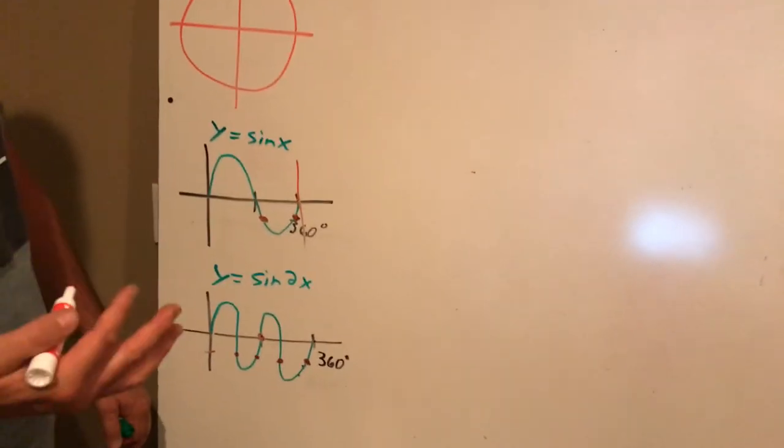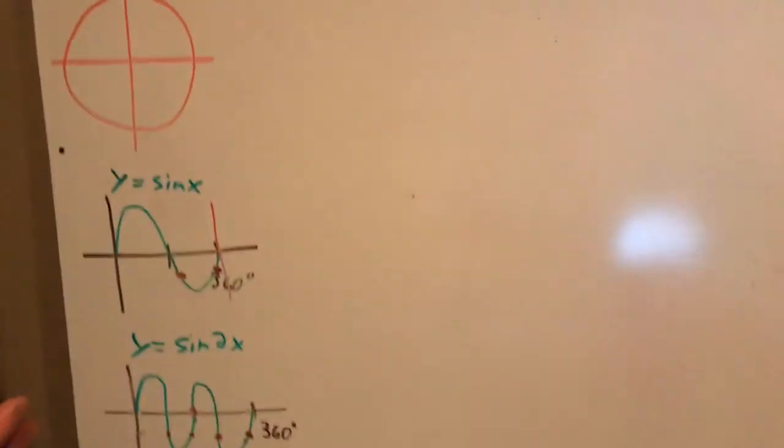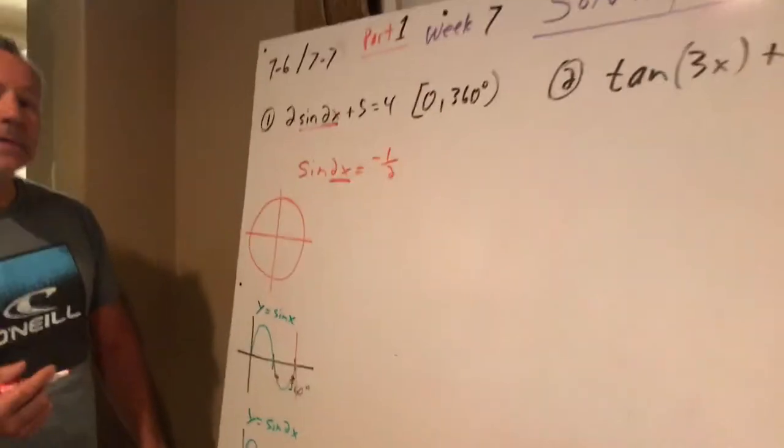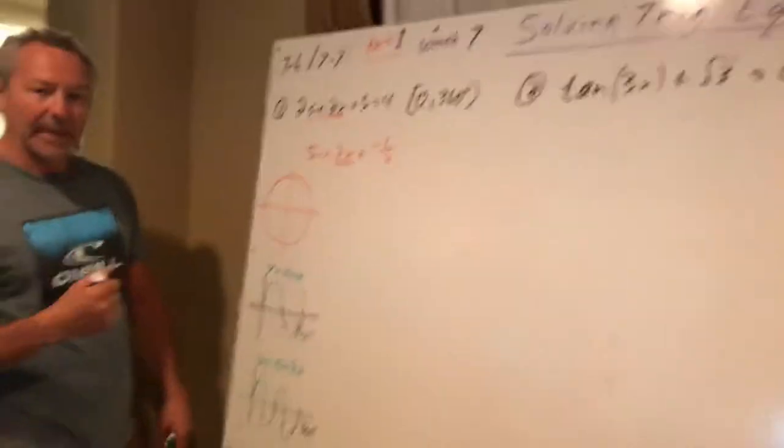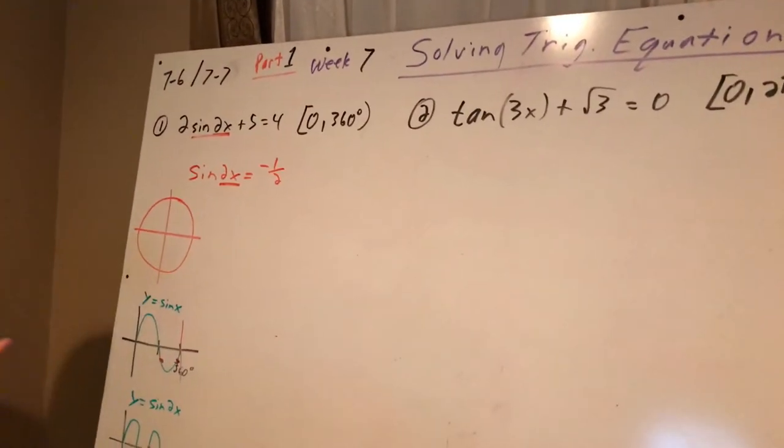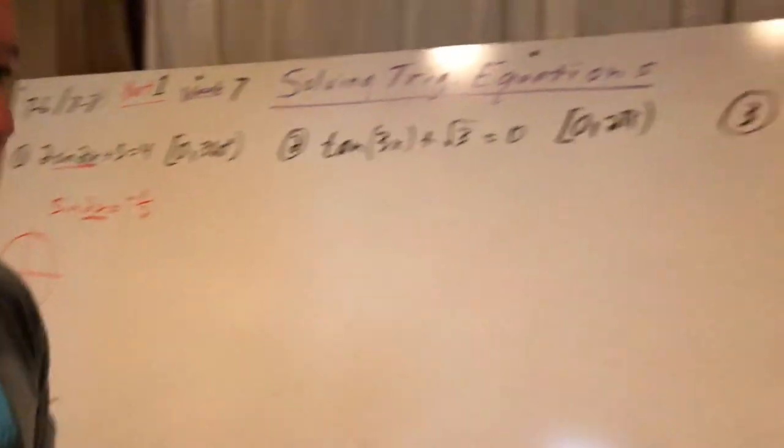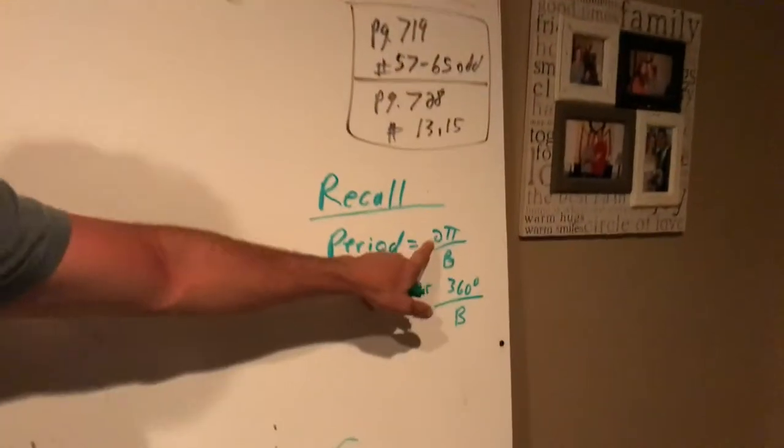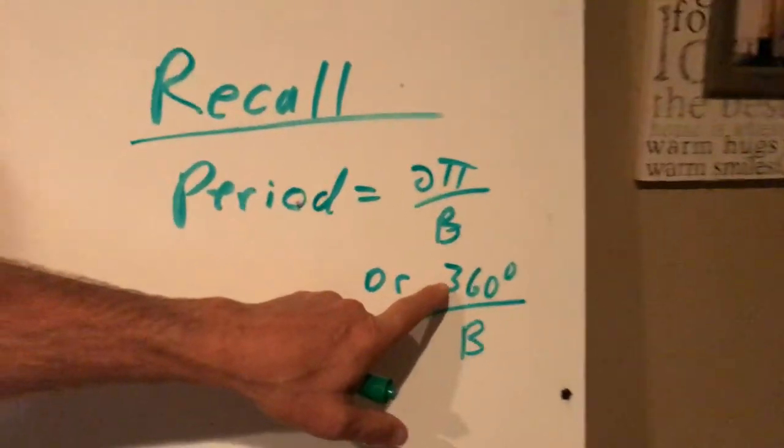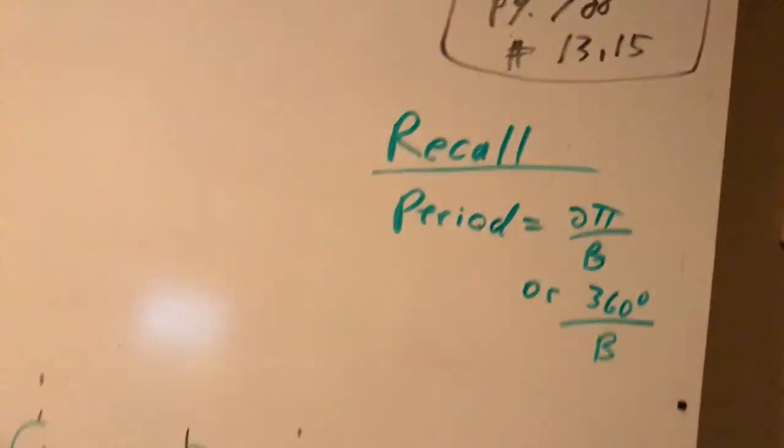So that's going to result in more answers on this particular problem. So what we're going to do to accomplish that or to handle that is the same thing for all problems. When we get our answers, I'll get those. And we're going to add the period repeatedly until we're out of range. And our range is from zero to 360. So any answers that lie after that are no good. Over here, if you recall, the period is either 2π over b or 360 over b, depending if we're working in radians or degrees.